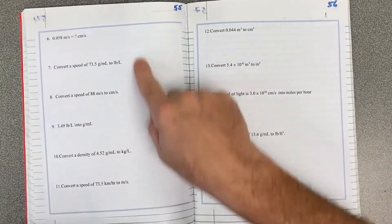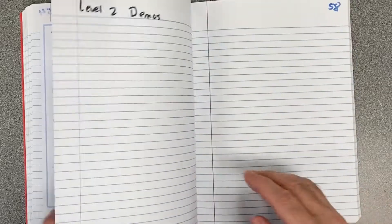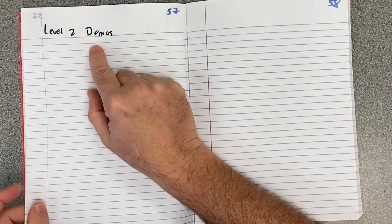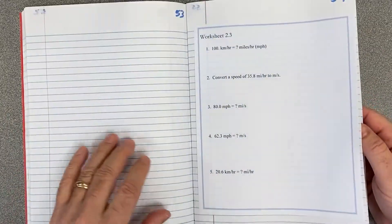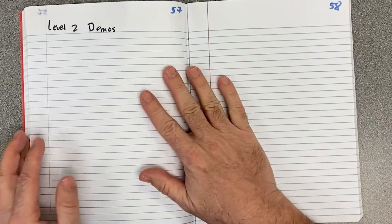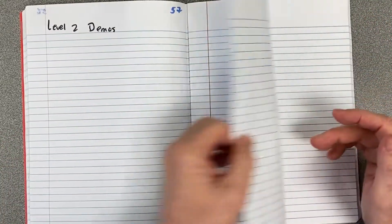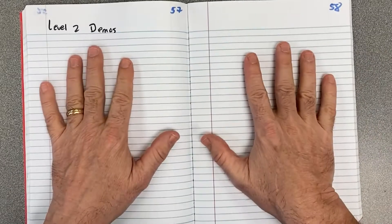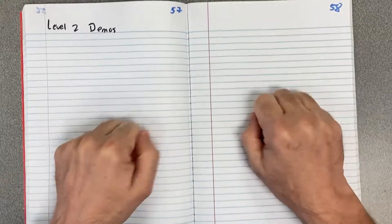Here is worksheet 2.3. Looks like it's three pages. And then the level two demos. So it's a pretty short unit. There's only three sections, one, two, three, for you to master. And then we'll probably have additional demos, page 58, page 59, or whatever. We'll just leave those blank before we start level three. Good to go.